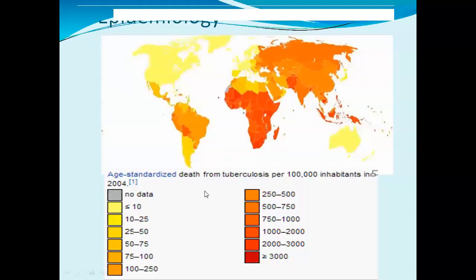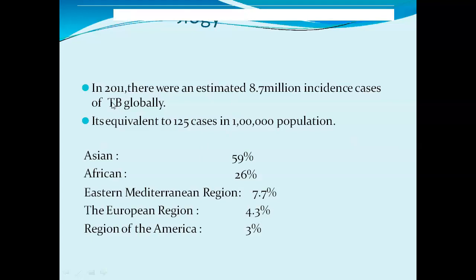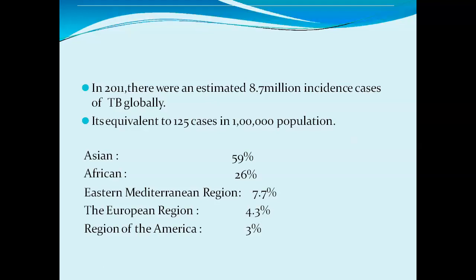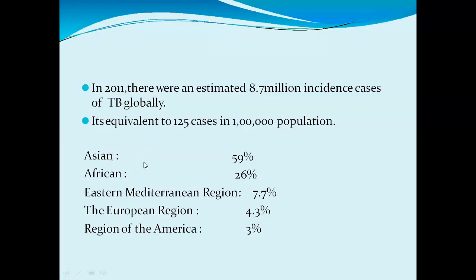In 2011, there were an estimated 8.7 million incidence cases of TB globally, equivalent to 125 cases per 100,000 population. Among these, Asian population accounted for 59%, African population 26%, Eastern Mediterranean region 7.7%, European region 4.3%, and the Americas 3%.